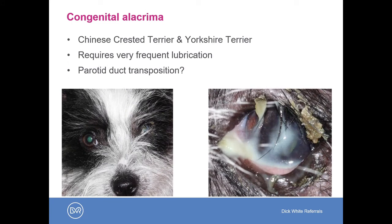Congenital alacrima is most common in the Chinese Crested and the Yorkshire Terrier. These photographs are of Chinese Crested Terriers — these dogs tend to have very profound dry eye, requiring very frequent lubrication to reduce secondary side effects, corneal ulceration, and to maintain comfort. Parotid duct transposition — a surgical treatment — is often considered fairly early on for these patients.